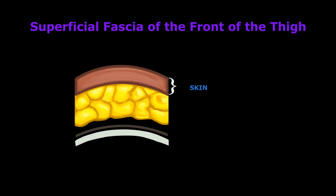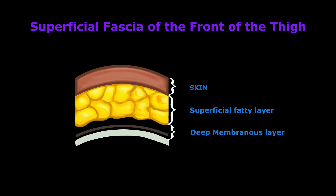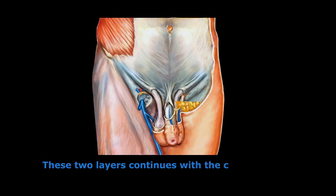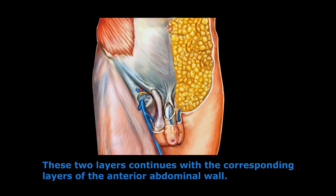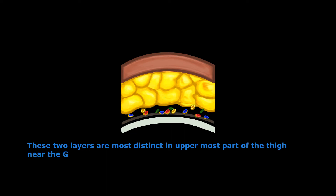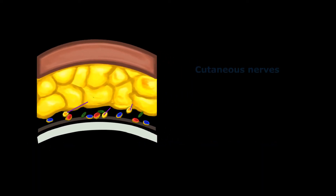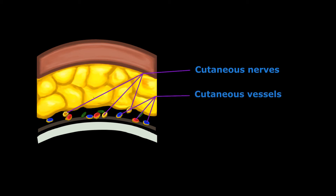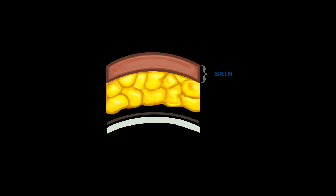Let us begin our discussion with the superficial fascia of the front of the thigh. The superficial fascia of the front of the thigh is made up of two layers: a superficial fatty layer and a deep membranous layer. These two layers continue with the corresponding layers of the anterior abdominal wall, and are most distinct in the uppermost part of the thigh near the groin, where we can see the cutaneous nerves, cutaneous vessels, and cutaneous lymph nodes lie between these two layers.